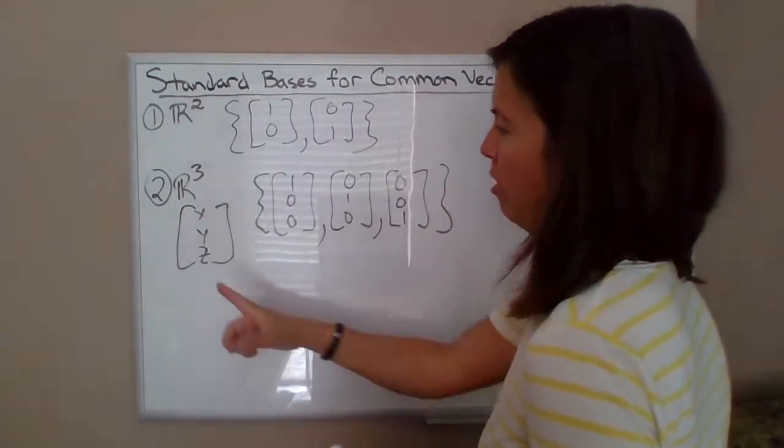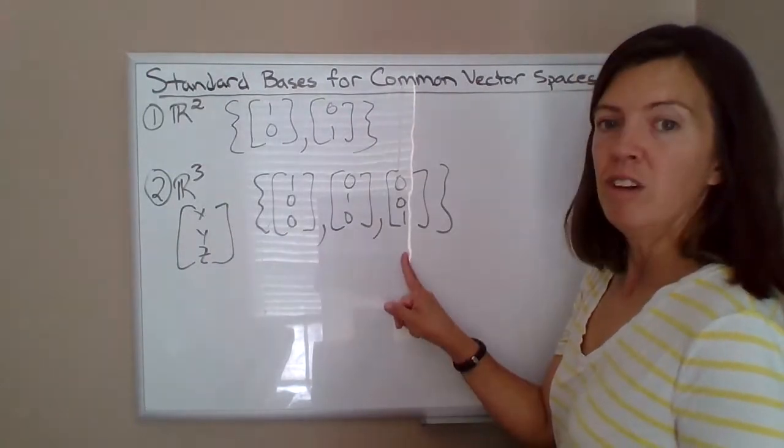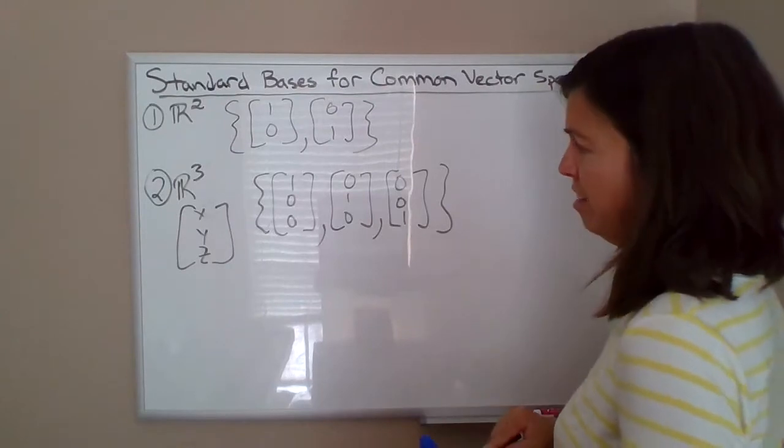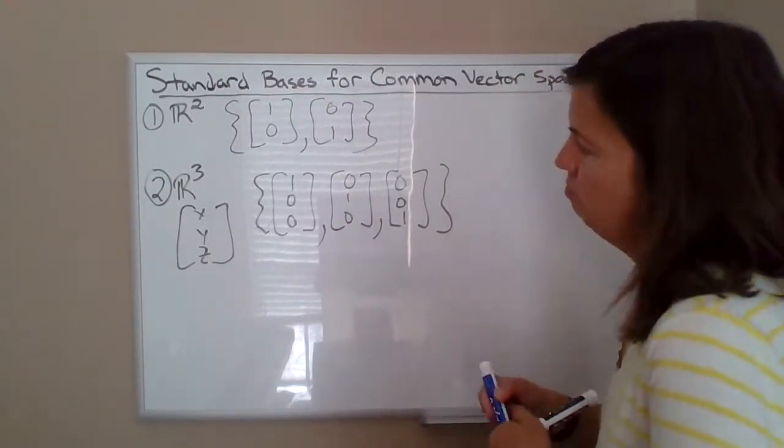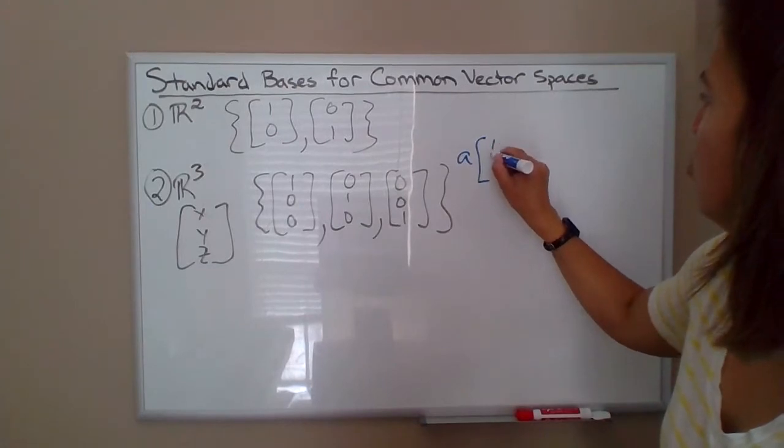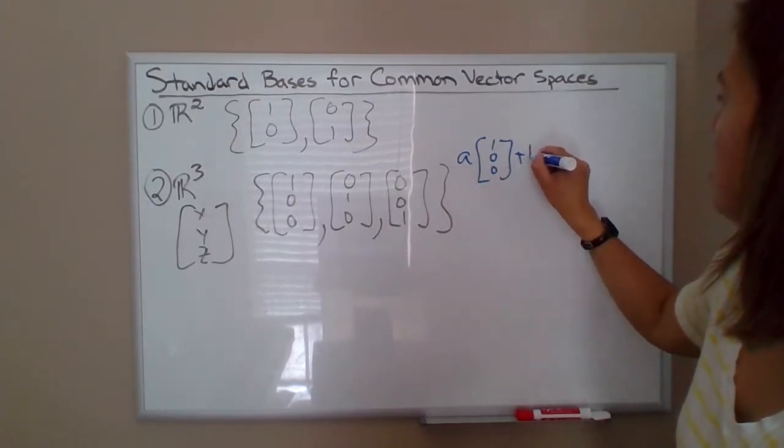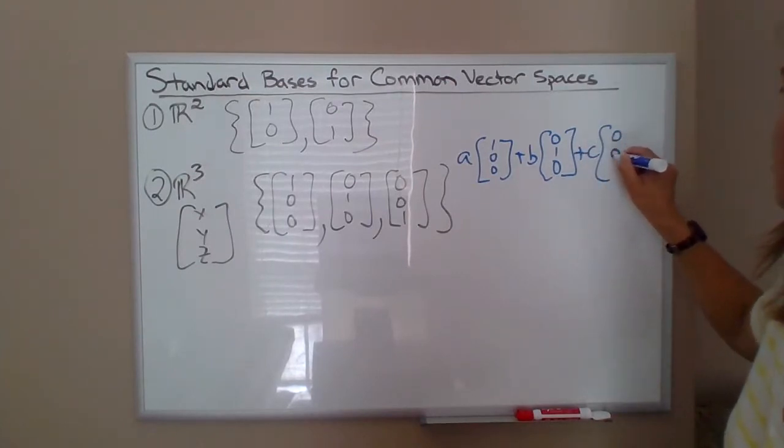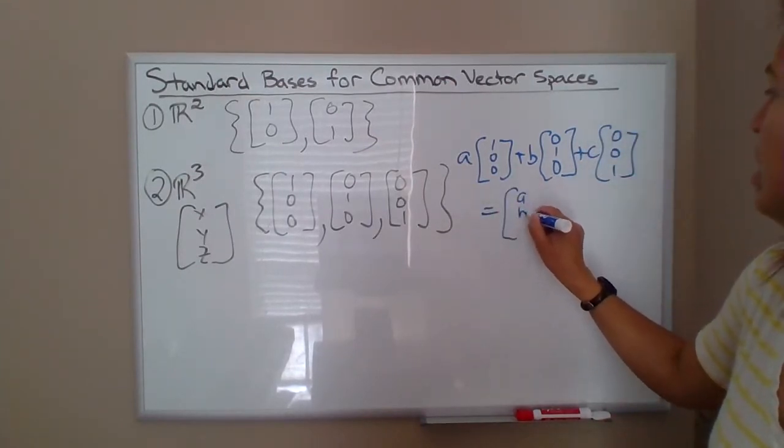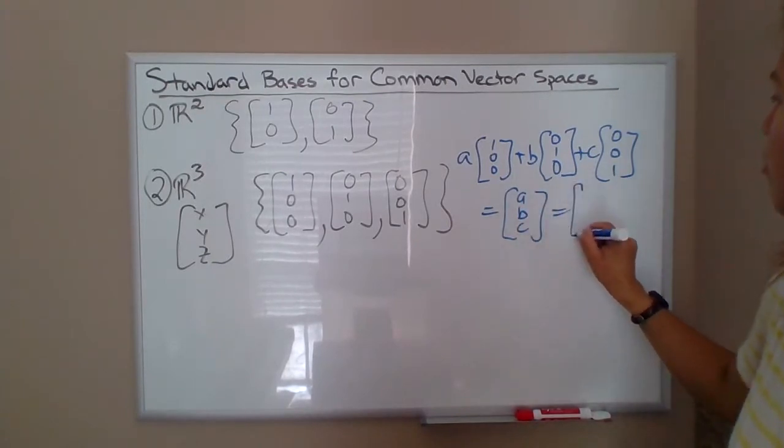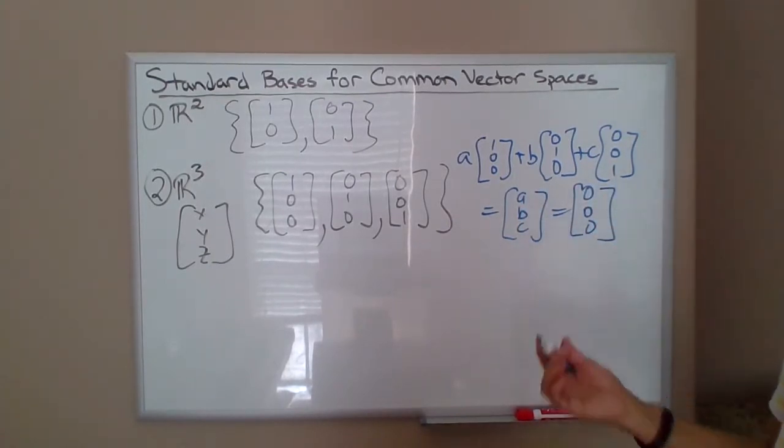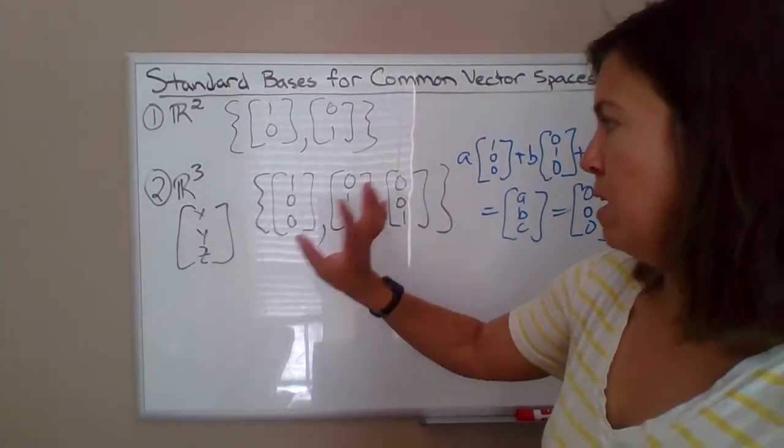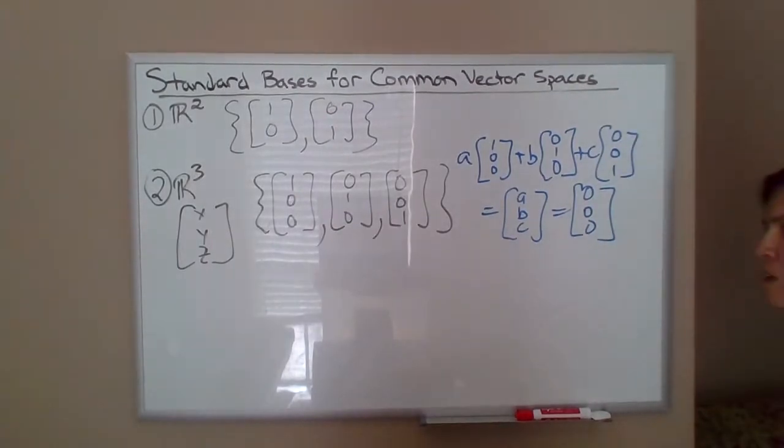Any vector X,Y,Z can certainly be written as a linear combination of these three vectors, just X times this vector, Y times this vector, Z times this vector. And if I set up the equation, so A times this first vector, B times the second vector, C times the third vector, then that's going to give me just this vector ABC. If that's equal to the zero vector, then each of ABC must be equal to zero. So it's got only the trivial solution. So these are linearly independent. So that's a basis. It meets those two criteria.